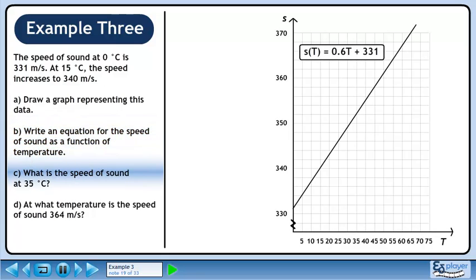In part c, we will find the speed of sound at a temperature of 35 degrees Celsius. We can use the function from part b to get the speed of sound at 35 degrees Celsius.